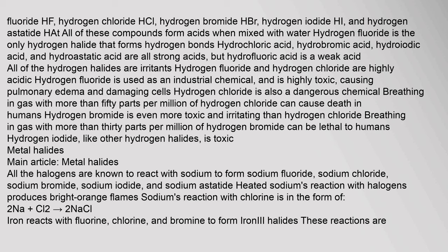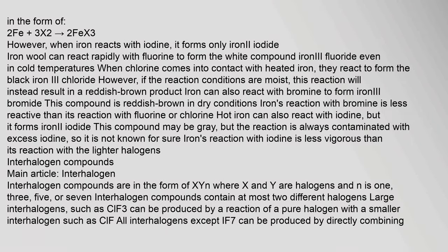Metal halides: All the halogens are known to react with sodium to form sodium fluoride, sodium chloride, sodium bromide, sodium iodide, and sodium astatide. Heated sodium's reaction with halogens produces bright orange flames. Sodium's reaction with chlorine is in the form of 2Na + Cl2 → 2NaCl. Iron reacts with fluorine, chlorine, and bromine to form iron halides; these reactions are in the form of 2Fe + 3X2 → 2FeX3. However, when iron reacts with iodine, it forms only iron(II) iodide. Iron wool can react rapidly with fluorine to form the white compound iron(III) fluoride even in cold temperatures.